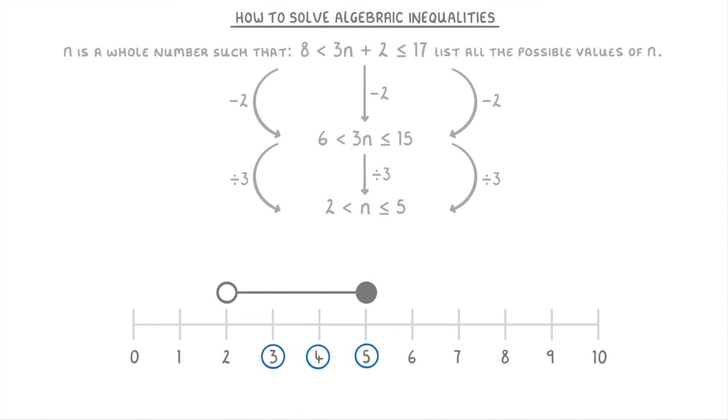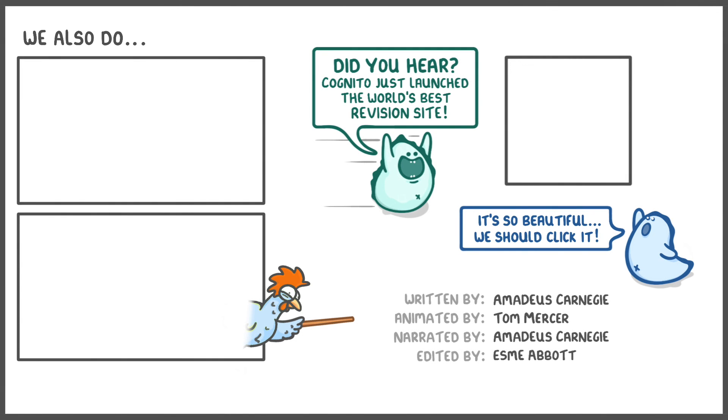Of course, if we hadn't been told that n was a whole number, then it could also have been any of the decimal values in between. But they'll normally say something about it being a whole number or an integer, so just read the question carefully and watch out for it. Anyway, that's everything for this video, so hope it all made sense and cheers for watching.